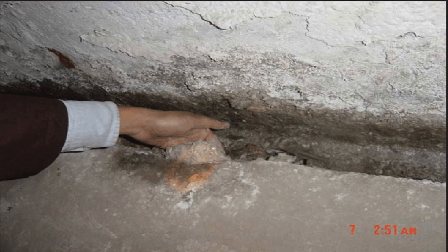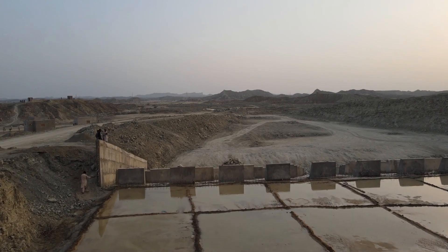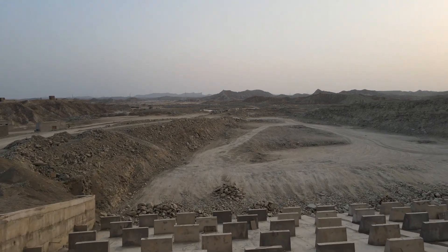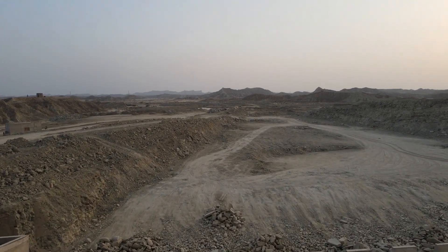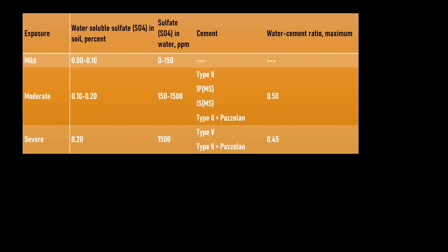C3A is the primary component responsible for ettringite formation. When it comes to sulfate-resisting cement, we find ways to reduce the amount of C3A — either by reducing the C3A content directly or by replacing cement particles with pozzolans that can help improve the structural integrity of the structure.